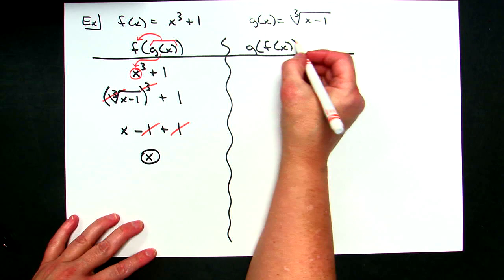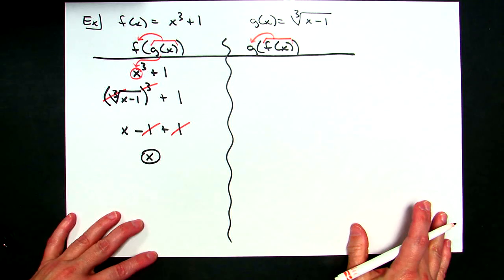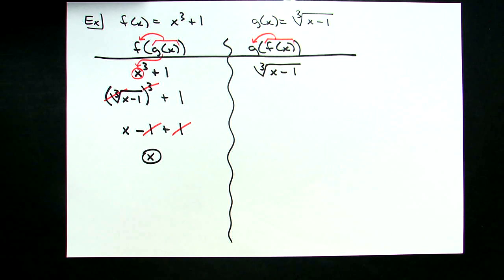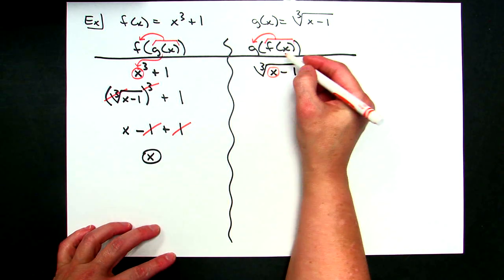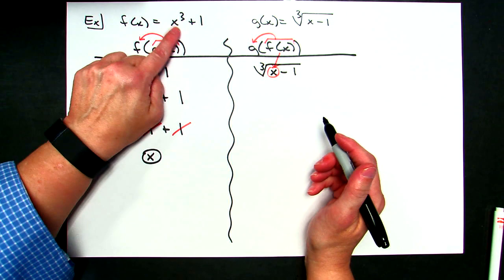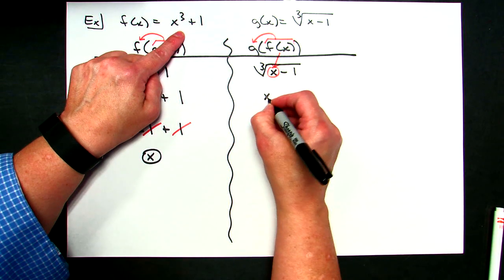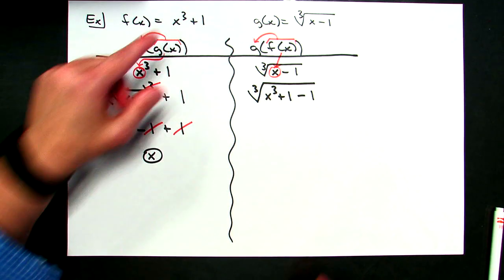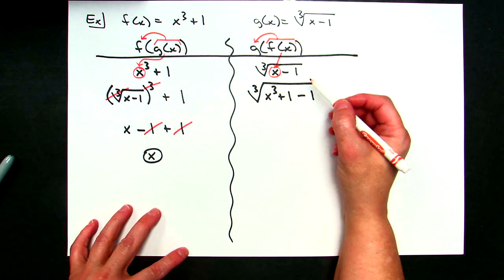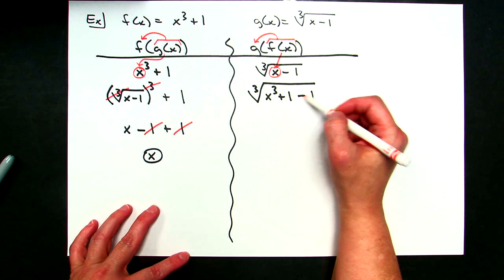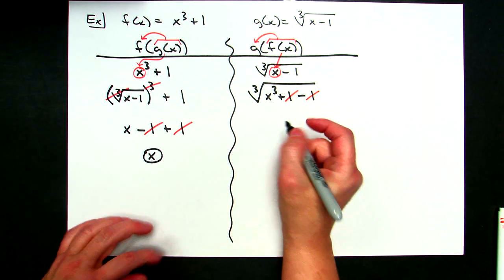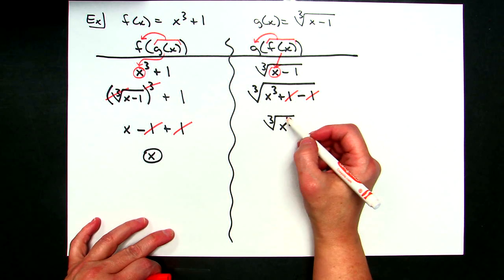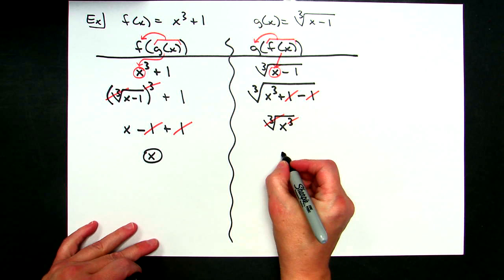For g of f of x, I write down the g function — the cube root of x minus one — and put the f function in where the x is. My f function is x to the third plus one, so it becomes the cube root of x to the third plus one, minus one. Working underneath the radical first, the plus one minus one cancels, simplifying to the cube root of x to the third. Taking the cube root and raising to the third power cancel out, leaving just x.